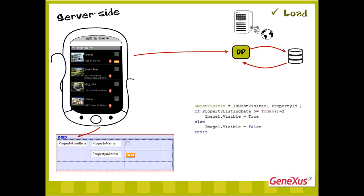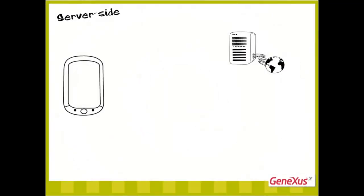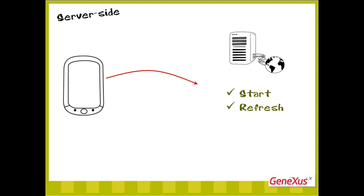Therefore, this code is executed on the server, so we can use the commands we usually apply in the case of web applications. For example, here we are invoking a procedure called IsmostVisited, which is internal. The Start event will also be executed on the server, but only when the screen is executed for the first time. Instead, the Refresh will be executed every time the screen has to be refreshed. The Load event will be executed immediately following the Refresh. This covers all the aspects we wanted to review regarding events in the various screens of a WorkWith for smart devices. Everything we saw also applies to the events of panels for smart devices.